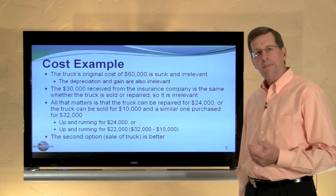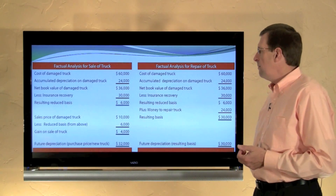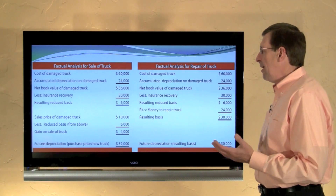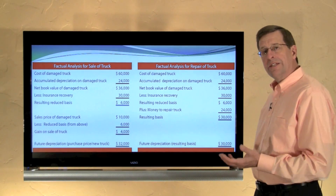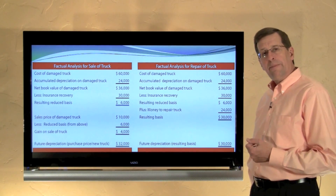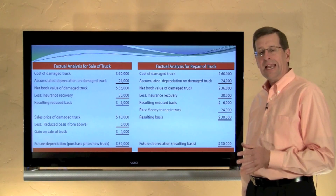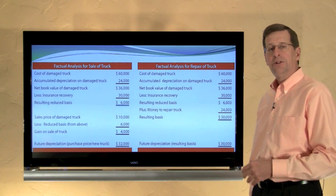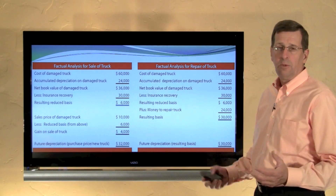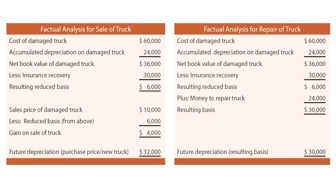Can it really be that simple? What about all of the other information? I've done quite a bit of factual analysis to determine the impact on income and cash flows to prove we get to exactly the same conclusion by a much more cumbersome process. I'm not so concerned that you follow every detail, except that you see that we do get to the same simple $2,000 difference.